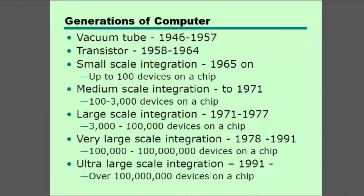This is just an overview of how computers came to be. In 1946 and 1957, the vacuum tube came from the first generation.